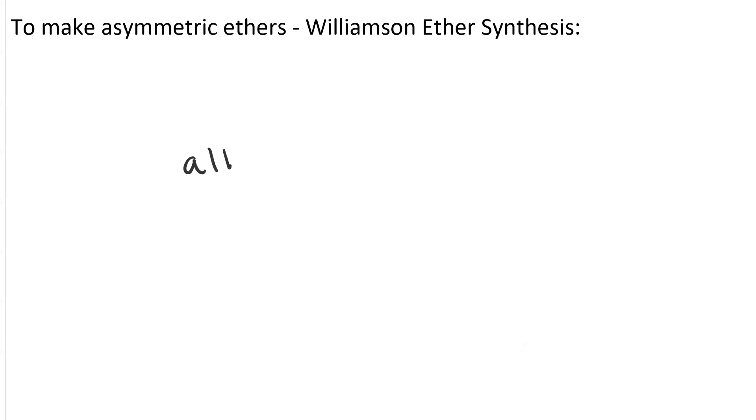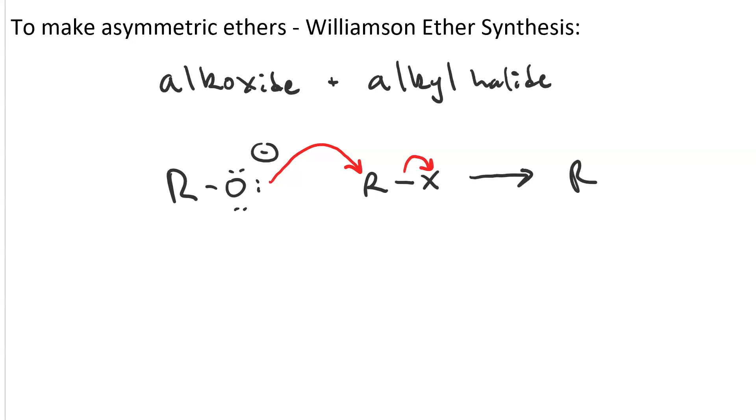is having an alkoxide perform nucleophilic attack on an alkyl halide. So, this is SN2. Here is our alkoxide, hits the alpha carbon of the alkyl halide, and the halogen leaves, and we end up with our ether.